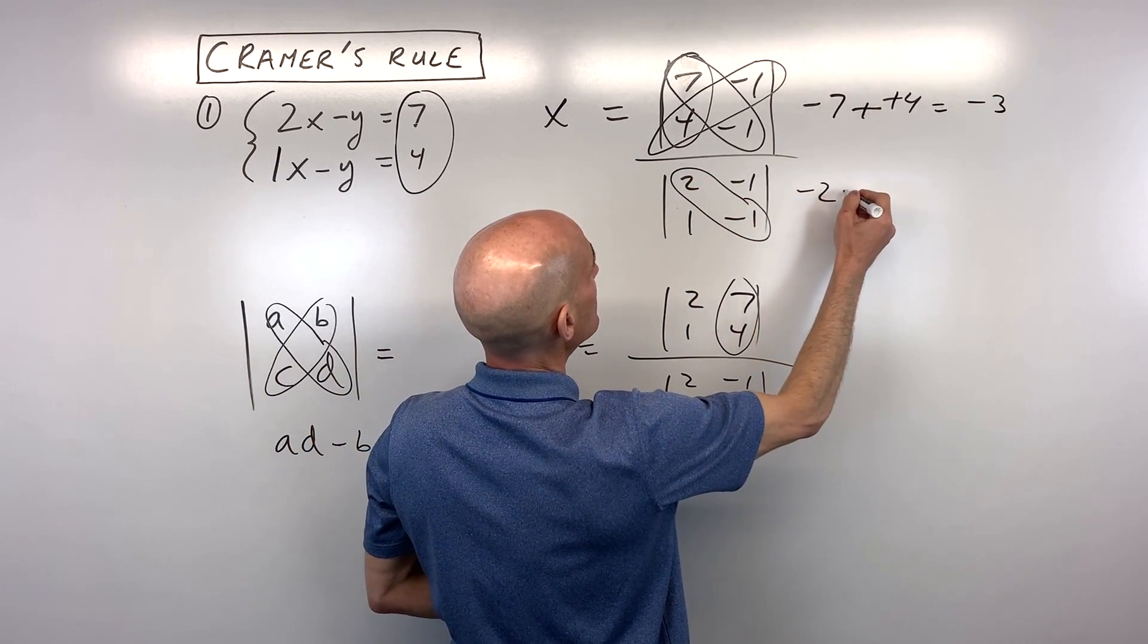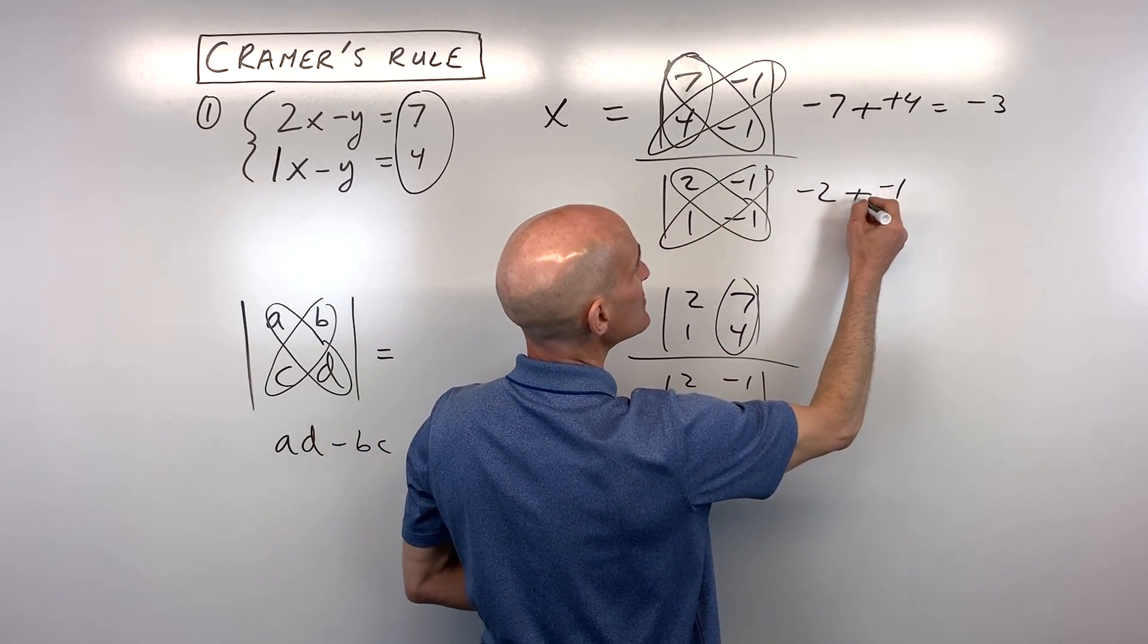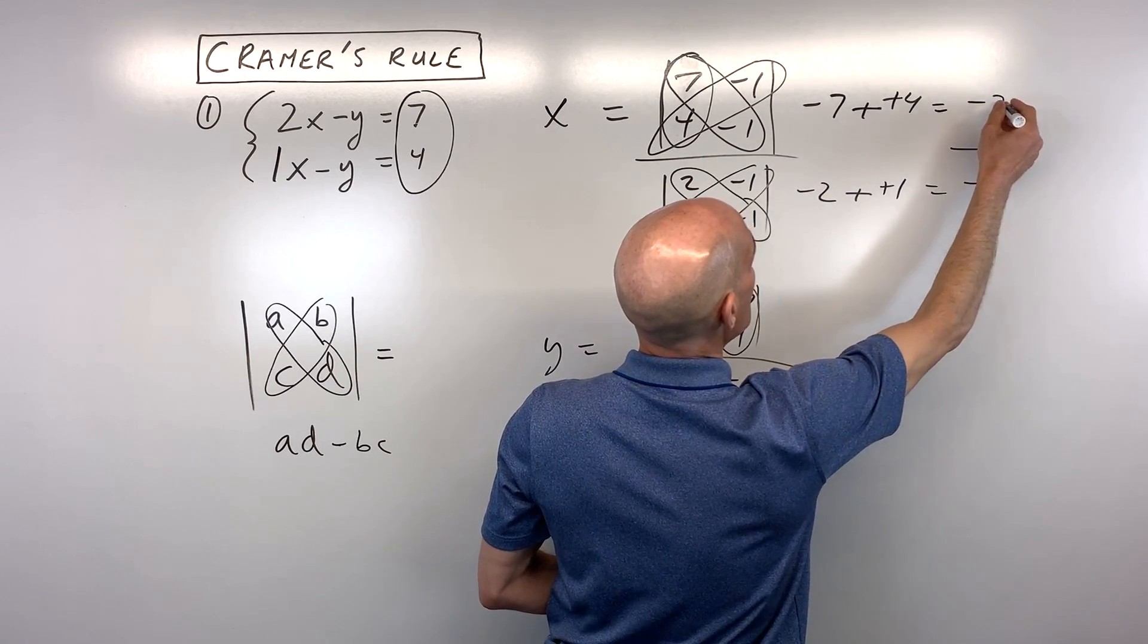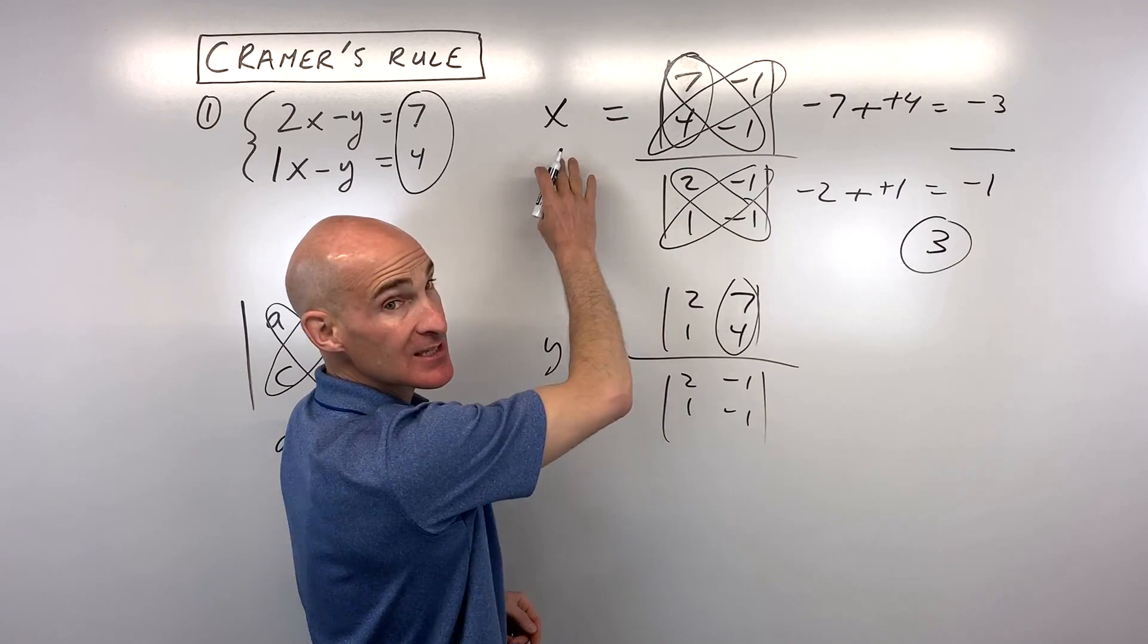It's negative 3. Over here in the denominator, this diagonal, negative 2, minus this diagonal, negative 1 times 1 is negative 1. When we subtract, it's like adding the opposite. That's equal to negative 1. And so we have negative 3 divided by negative 1, which is 3. So that's what x equals.